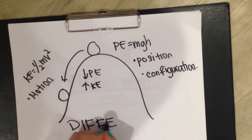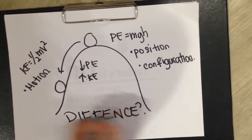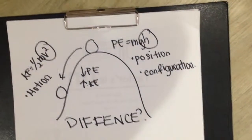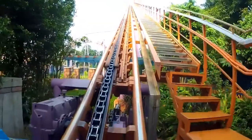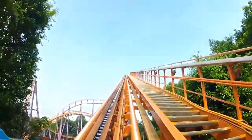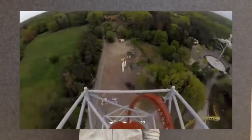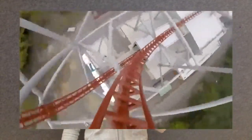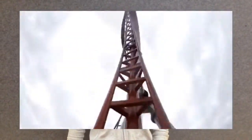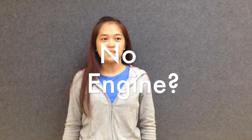So what's the difference between these two energies? The difference comes from the velocity and its height. A ride often begins with a chain and motor exerting force on the cars to lift the coaster to the top of a tall slope. Once the car reaches the top of the slope, gravity takes over and the rest of the ride works on energy transformation. Here is an interesting fact: there is no motor or engine that takes the roller coaster around the track.